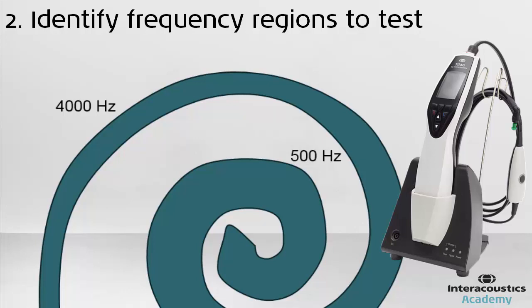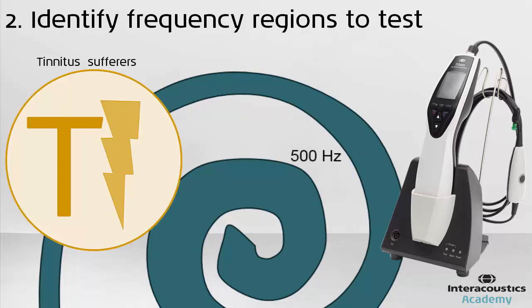This is particularly useful in the assessment of tinnitus patients, where an in-depth assessment of the suspected region of the cochlea thought to be the root cause of the tinnitus is required. By selecting a specific region, clinicians can save time by only undertaking a detailed assessment of the area they wish to test, rather than the entire length of the basilar membrane.